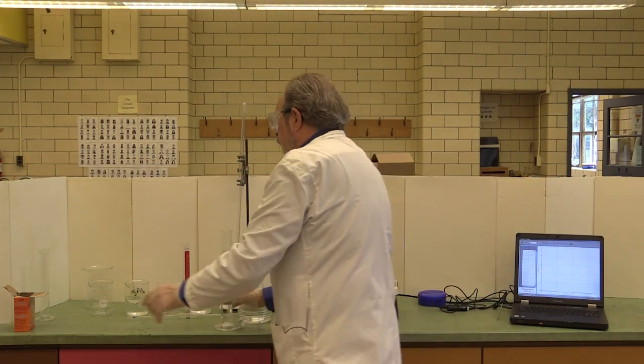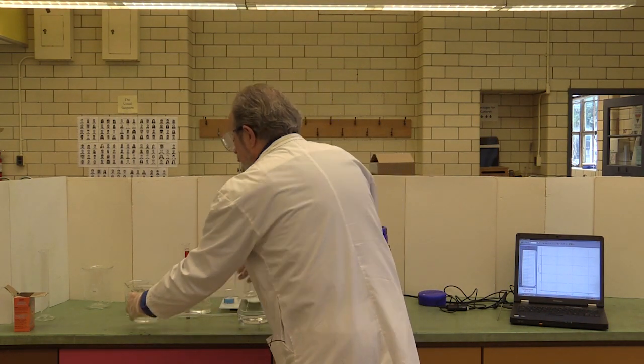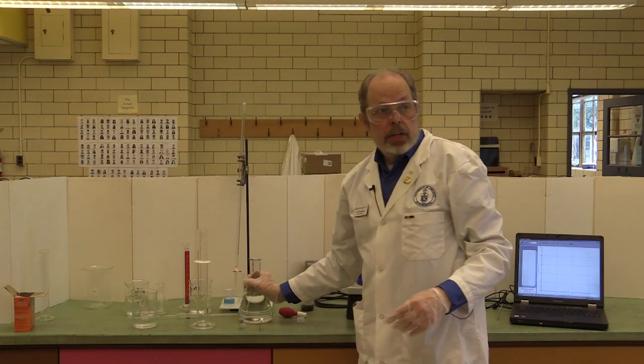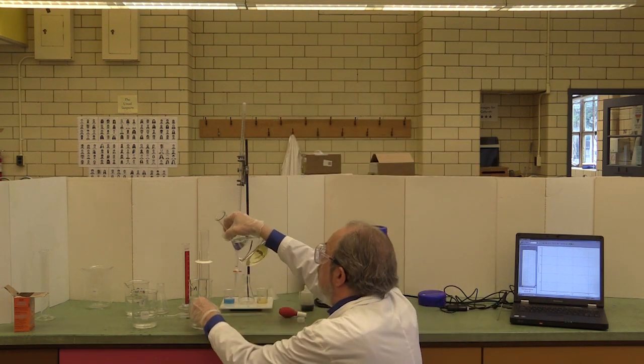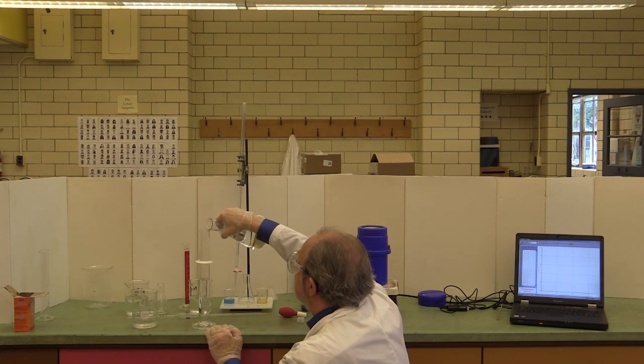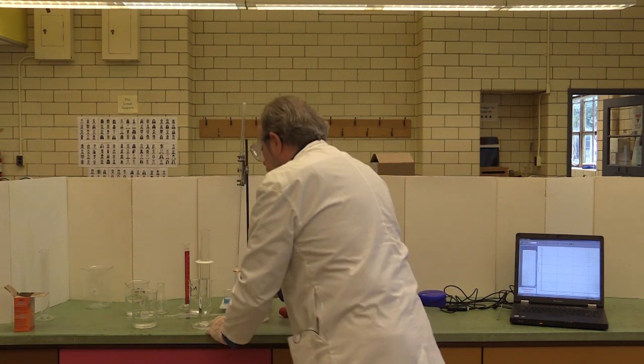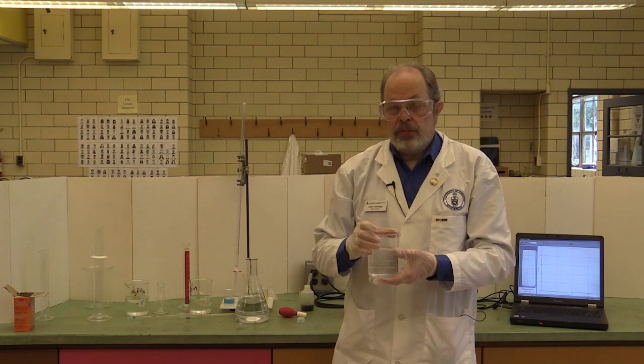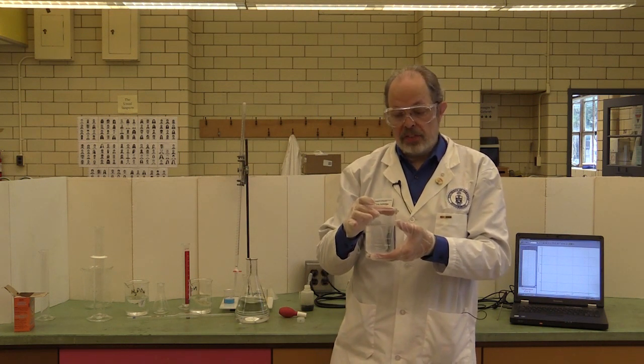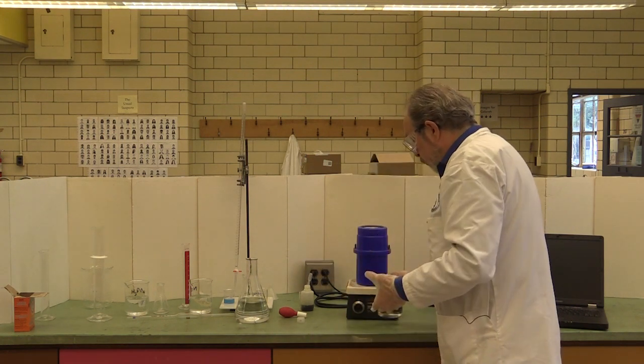That's 250. And I need to pour that into another dry beaker. And I'll need another 125 mils to make it up to 375 mils total. Got it. So now I have 375 mils of a sodium hydroxide solution that has the right number of moles to react with one of the phosphoric acid protons. We're now ready to actually do the calorimetry experiment.